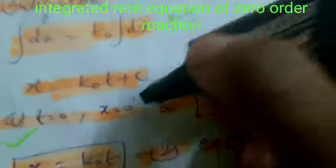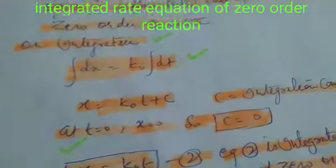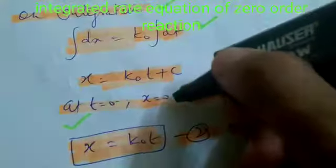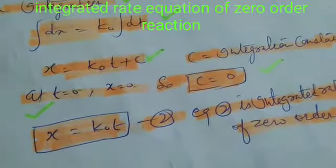So for this, at T equal to 0, the value of X is also 0. By putting T equal to 0 and X equal to 0 in this equation, we will get C equal to 0.